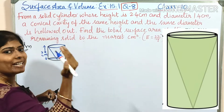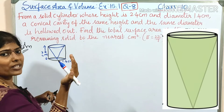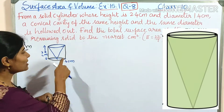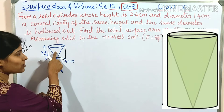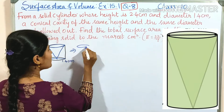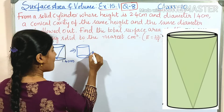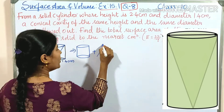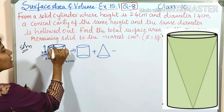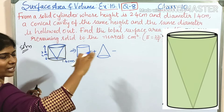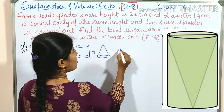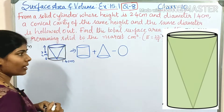The depression is formed inside the cylinder, so when counting the area we have to add the conical area as well. We consider the cylinder plus the curved surface area of the cone, minus the area of the top circle base, because it is hollowed out and open.